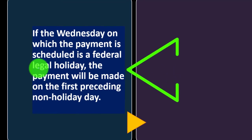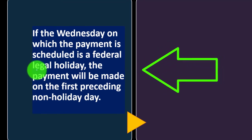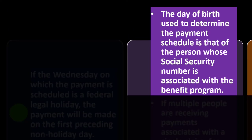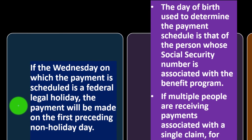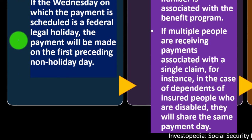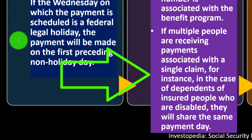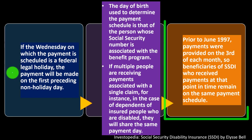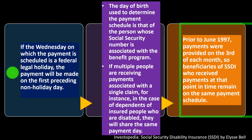If the scheduled Wednesday falls on a federal legal holiday, payment is made on the first preceding non-holiday day. The day of birth used to determine the payment schedule is that of the person whose Social Security number is associated with the benefit. If multiple people receive payments from a single claim — such as dependents — they share the same payment day. Prior to June 1997, payments were provided on the 3rd of each month.